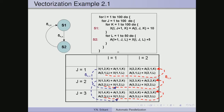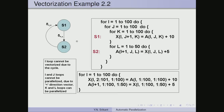The second example is a program we have seen before with its dependences: from S1 to S2 there is delta equal-less-than, and from S2 to S1 there is delta less-than-equal-to. This is a cyclic graph, so the i and j loops cannot be vectorized in the usual sense.